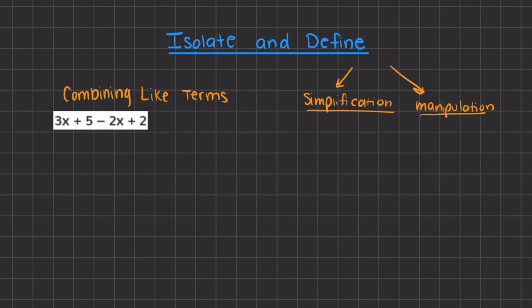In this video, we are going to go over isolating and defining variables, and that means that we want to find the value or simplify the expression in order to find the value of our variables. The two main methods we are going to learn are simplification and manipulation, and these are the main methods for solving, isolating, and defining variables in our expressions.